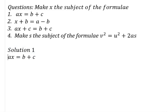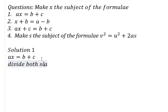Question 1: ax equals b plus c. We have to make x the subject of the formula. For our x to stand alone, what is disturbing our x is a, and a is in multiplication form with x. That means we are going to divide both the left-hand side and the right-hand side by a, so that our x can stand alone.